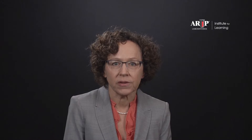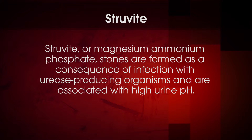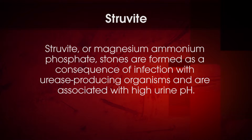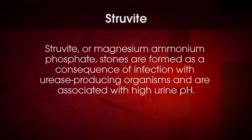Urine culture is performed to identify stones associated with urinary tract infections. These stones — magnesium ammonium phosphate, or struvite — are formed as a consequence of infection with urease-producing organisms and are associated with high urine pH.